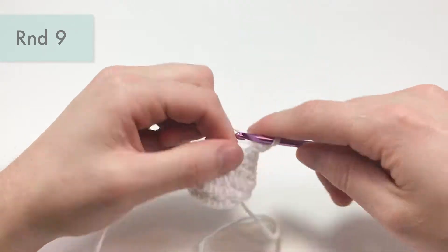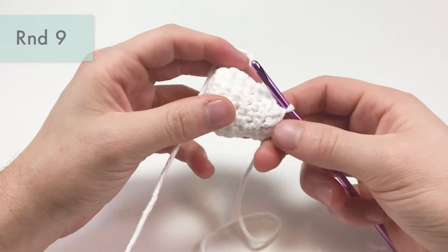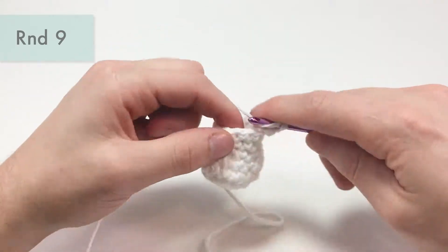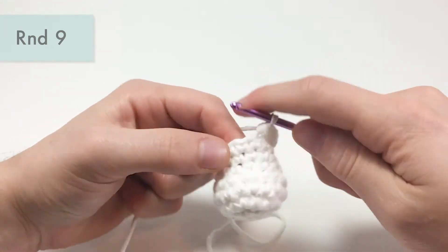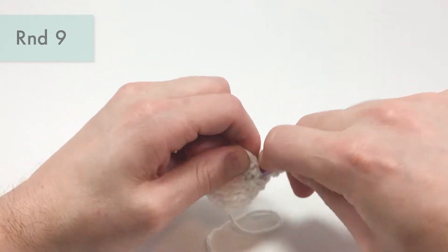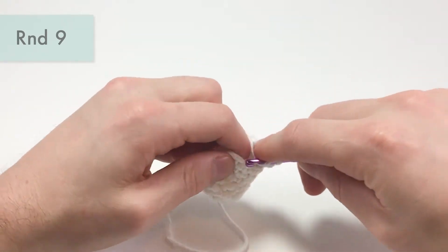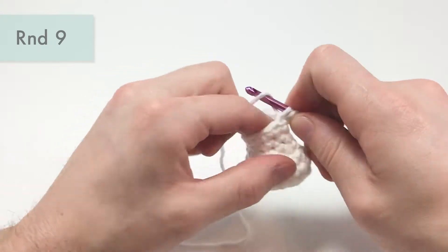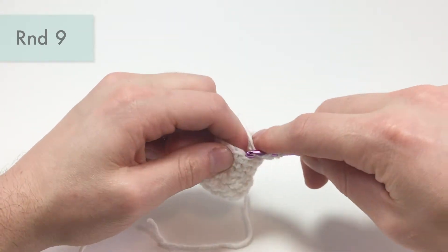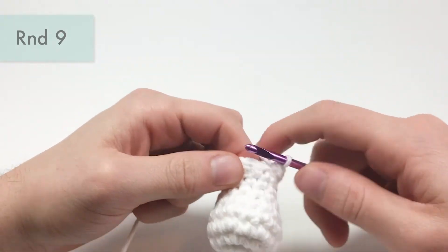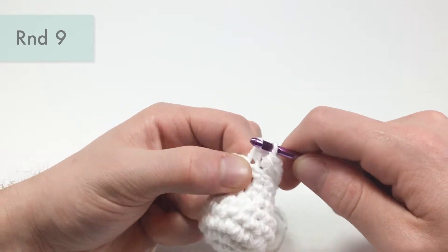And the reason we work into this back loop is because it makes a really nice ridge, almost like a border to the round. So you should have 12 half double crochets total by the end of this round. So we're at the end of our round here, done 12 half double crochets.